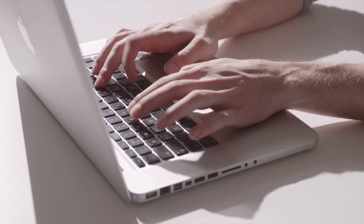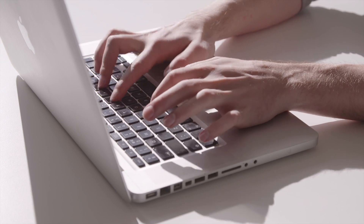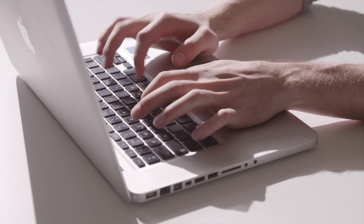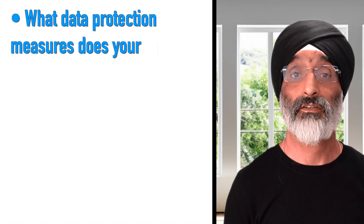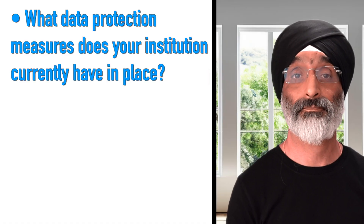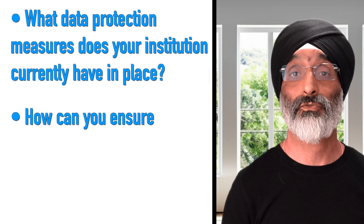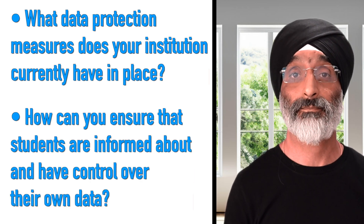Moreover, students should have control over their own data. This means giving them the ability to access, review and correct their data, as well as to opt out of data collection if they choose. Consider these questions: What data protection measures does your institution currently have in place? How can you ensure that students are informed about and have control over their own data?